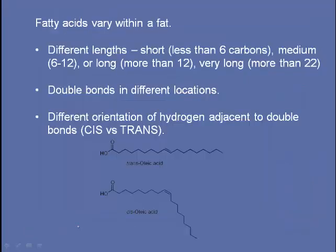Fatty acids vary within a fat — they come in different lengths: short, medium, long, or very long. The double bonds are located in different positions depending on the fatty acid. There's also the case of cis versus trans fatty acids. Trans fats are formed as a byproduct of food processing. The difference is just a different orientation of hydrogen adjacent to double bonds, producing isomers with a different shape — and as a result, they are very harmful to our cardiovascular system and contribute to cardiovascular disease.